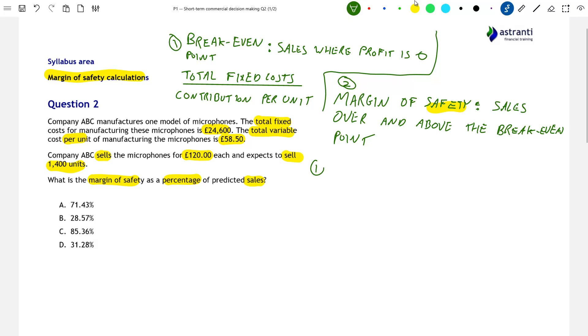So step one, finding the break-even point. Well, the question tells us that company ABC's total fixed costs are £24,600. So we'll put this as the numerator in our formula for finding the break-even point. We know the company ABC sells the microphones for £120 each and the total variable cost per unit of manufacturing the microphones is £58 and 50 pence.